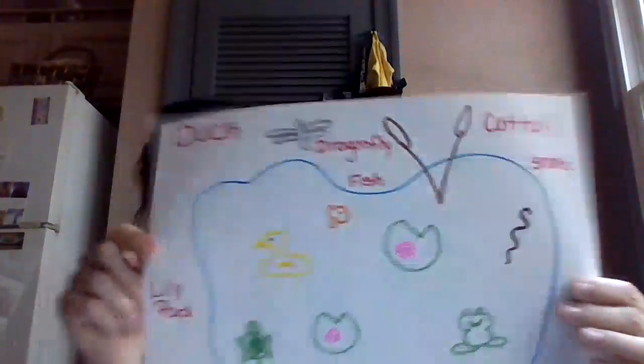The duck swims in the water, and the duck hatches from an egg. The duck sometimes will dive down in the water to get food. Isn't that cool? So we have all of these plants and animals that live at the pond — isn't that amazing? I had a lot of fun talking with you today about what lives at the pond. I will talk to you later. Bye, guys!